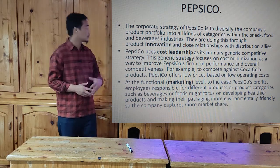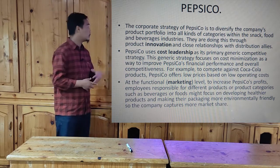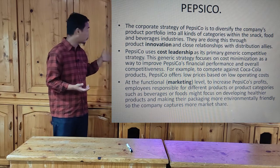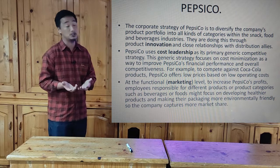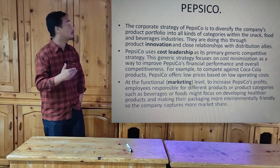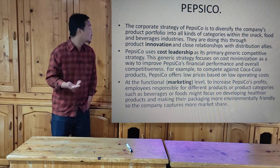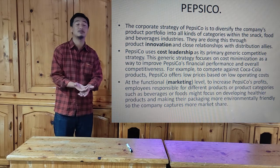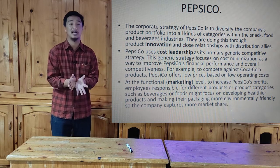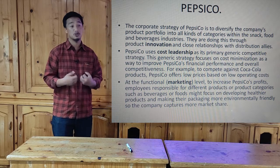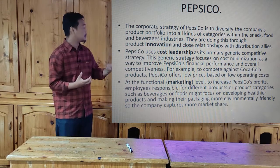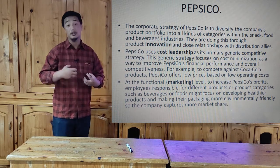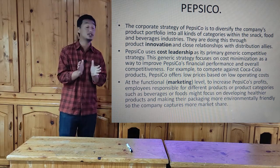This is an example of PepsiCo, one of the biggest companies in the world. Point one tells us about PepsiCo's corporate strategy, point two about business strategy, and point three about market strategy. The corporate strategy of PepsiCo is to diversify the company's portfolio into all kinds of categories. They do not just want to be seen as a company offering soft drink products — they also want to venture into various categories like snacks, food, and beverages, doing this through product innovation and close relationships with distribution allies.